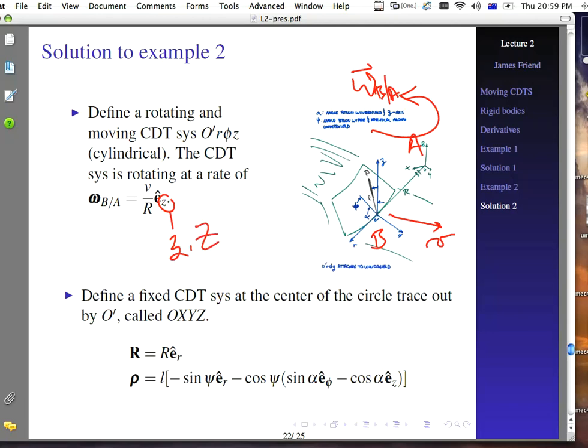And you'll notice that it doesn't matter if we use lowercase z or uppercase Z. They're both in the same direction. It doesn't matter where we draw the vector at because a vector doesn't change its definition. Neither does its direction nor its length change when you change where it's located. So it doesn't matter where we draw this at, whether we use lowercase or uppercase z. And so we have omega B with respect to A is equal to V over R, lowercase z.